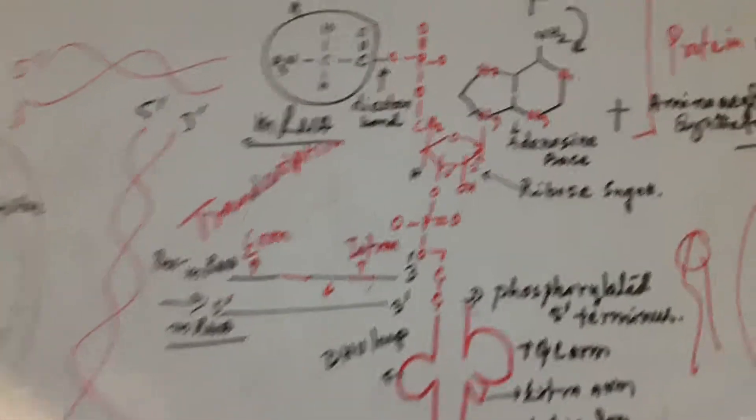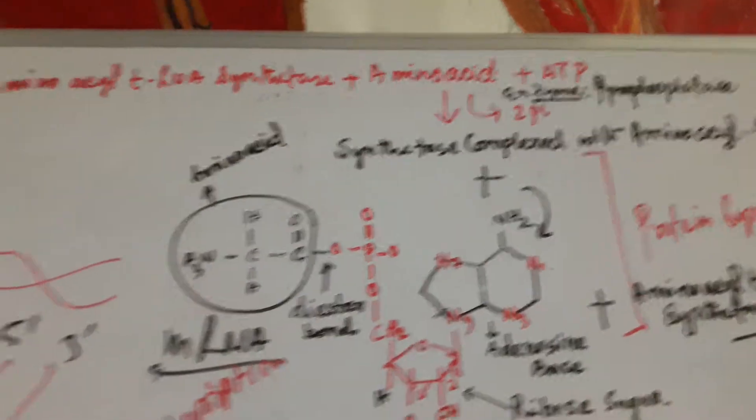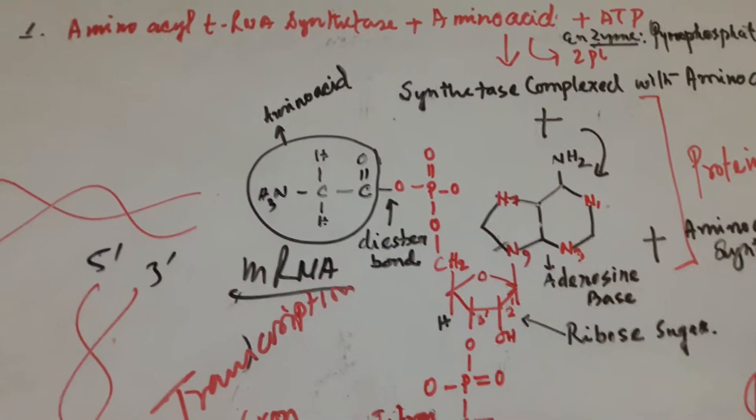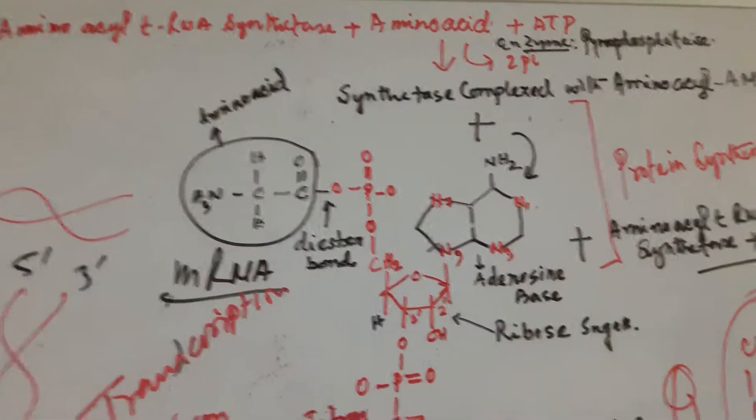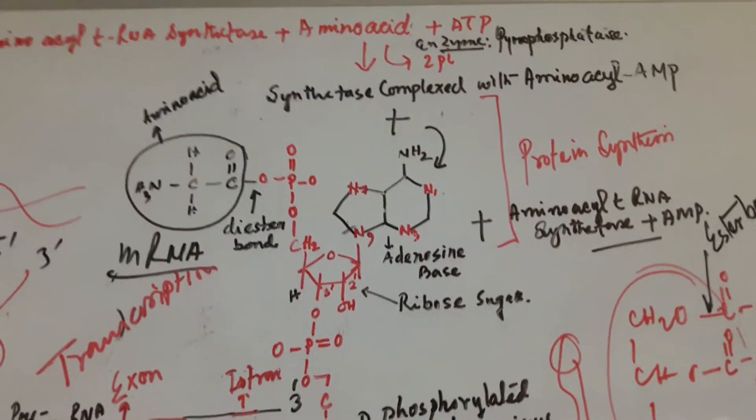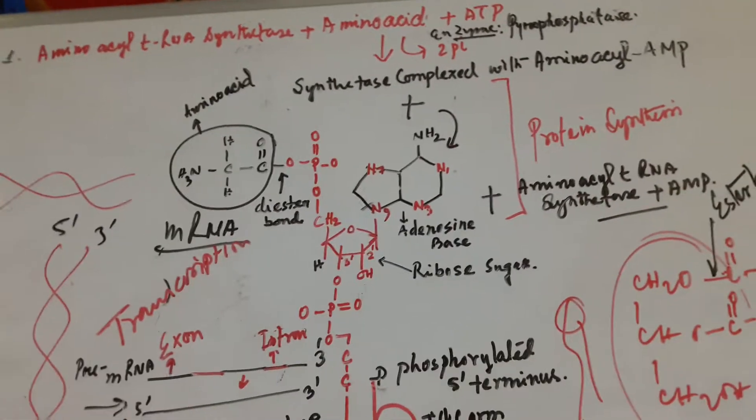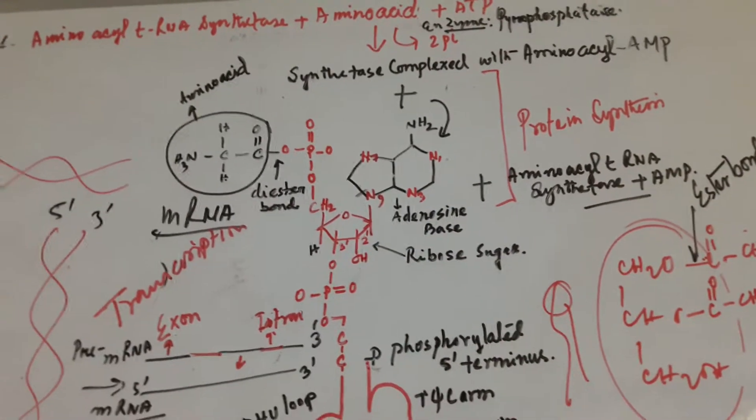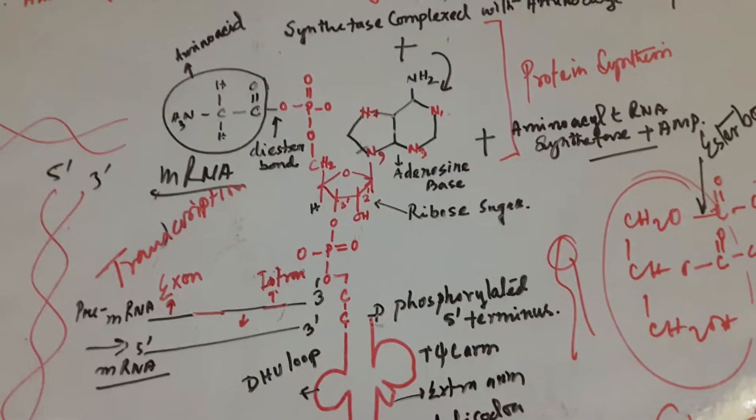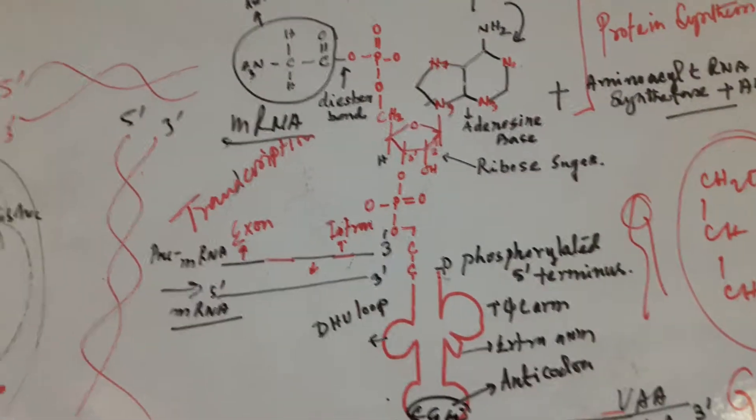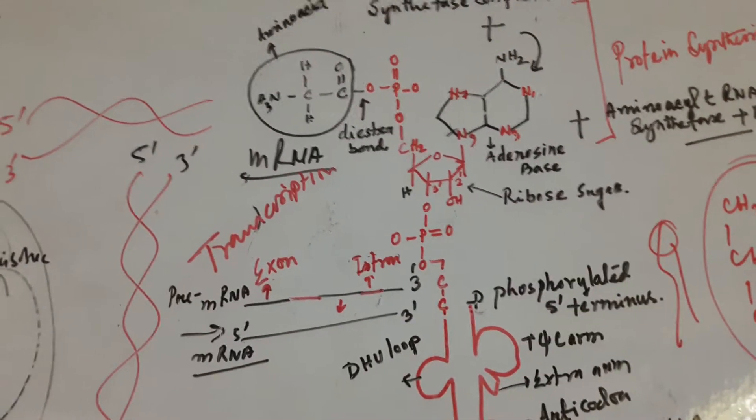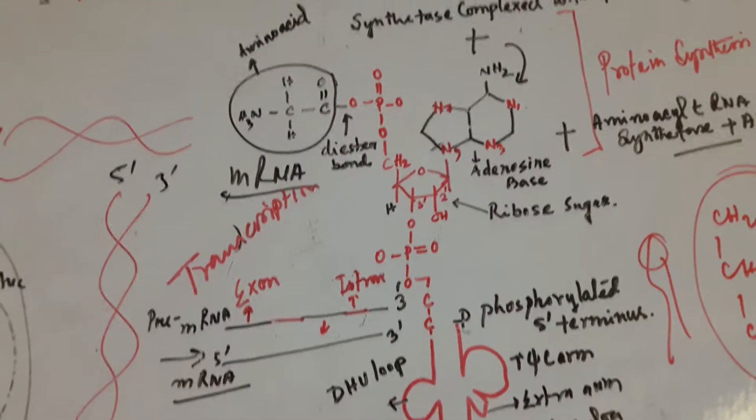So you see here the amino acid first, with the help of aminoacyl-tRNA synthetase and with the help of ATP energy, gets attached with the amino acid-AMP. That means synthetase complex with amino acid. Now you see the adenine base is shown, ribose sugar is shown, and the phosphate group is bonded with the amino acid with the help of a diester bond.